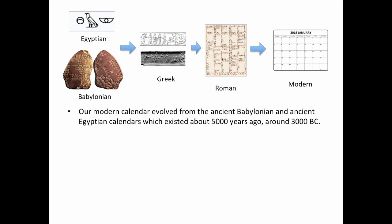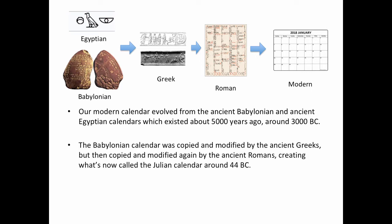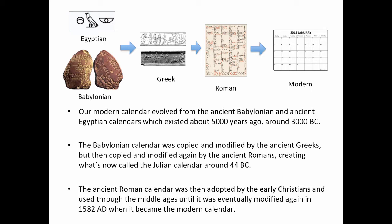Our modern calendar evolved from the ancient Babylonian and ancient Egyptian calendars, which existed about 5,000 years ago, around 3000 BC. The Babylonian calendar was copied and modified by the ancient Greeks, and then copied and modified again by the ancient Romans, creating what's now called the Julian calendar around 44 BC. The ancient Roman calendar was then adopted by the early Christians and used through the Middle Ages until it was eventually modified again in 1582, when it finally became the modern calendar.